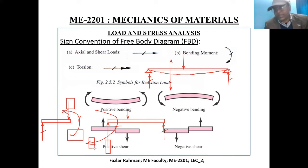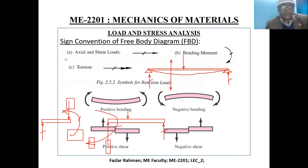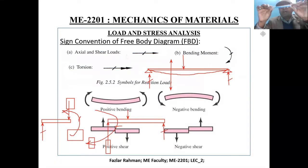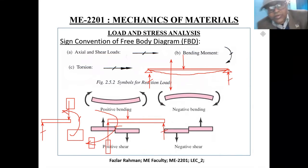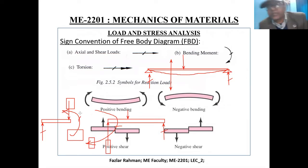For example, you see a pen in my hand — you can bend it this way or that way. So a member can bend upward or downward, and that is called bending moment. The M you see here is called bending moment. This bending moment has two signs: one is negative, the other is positive.